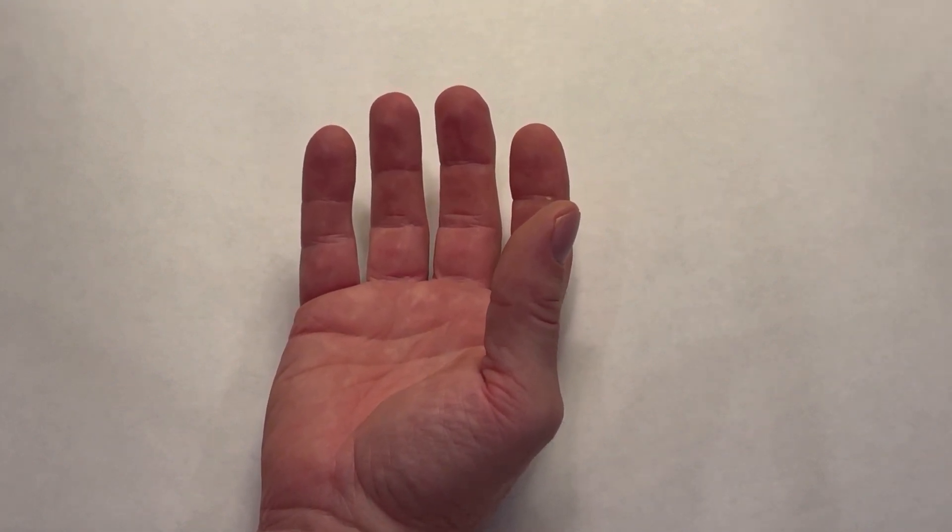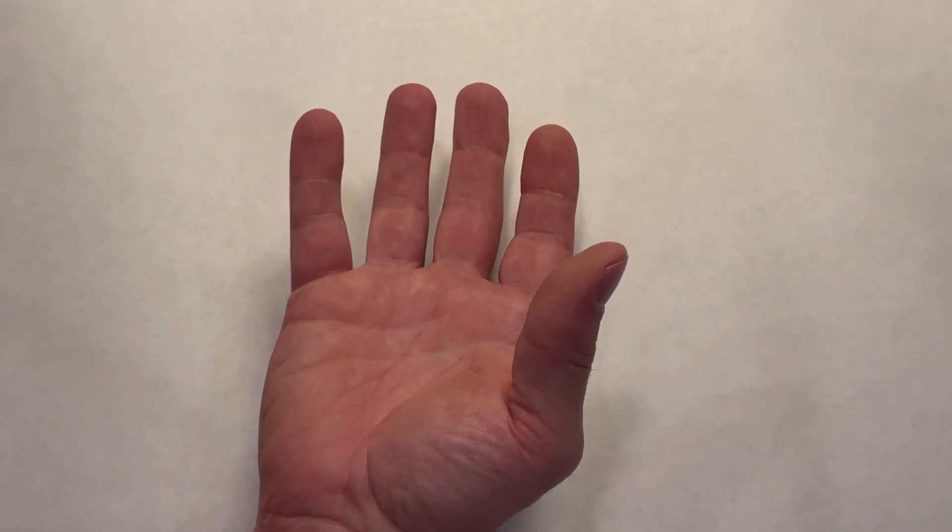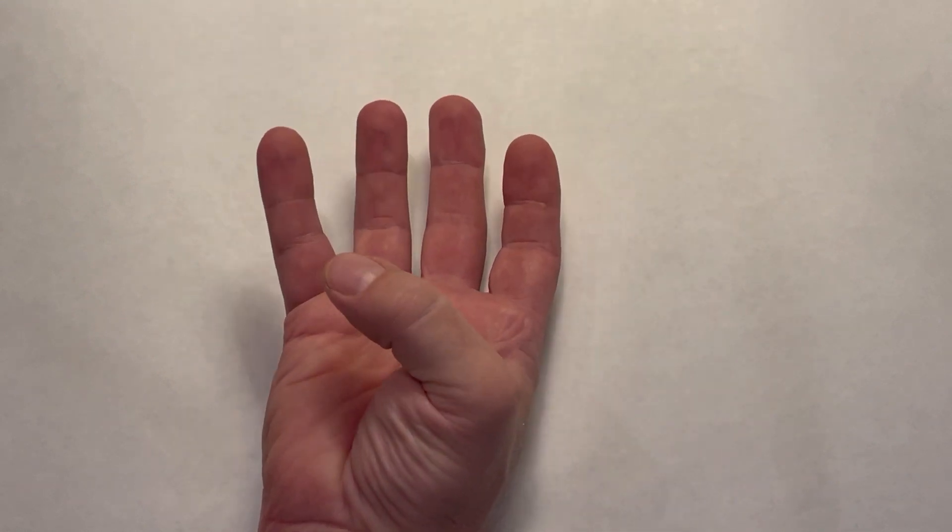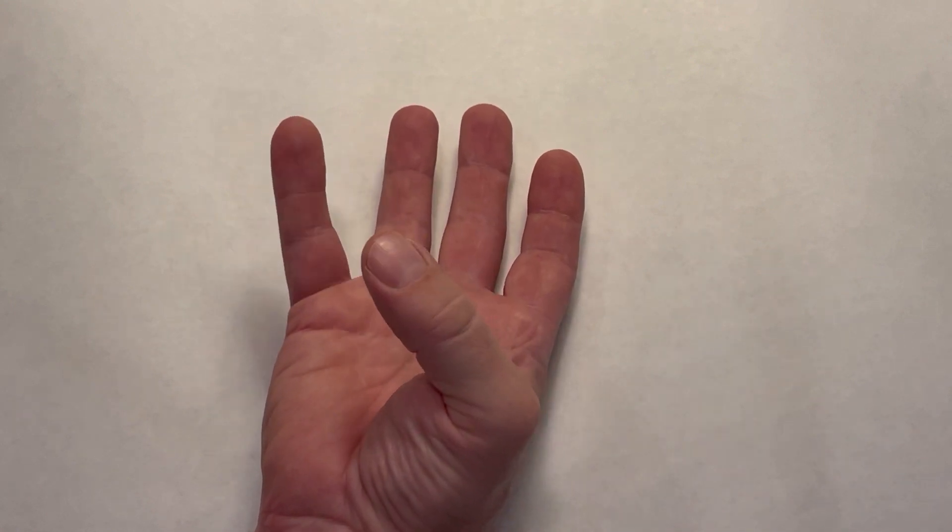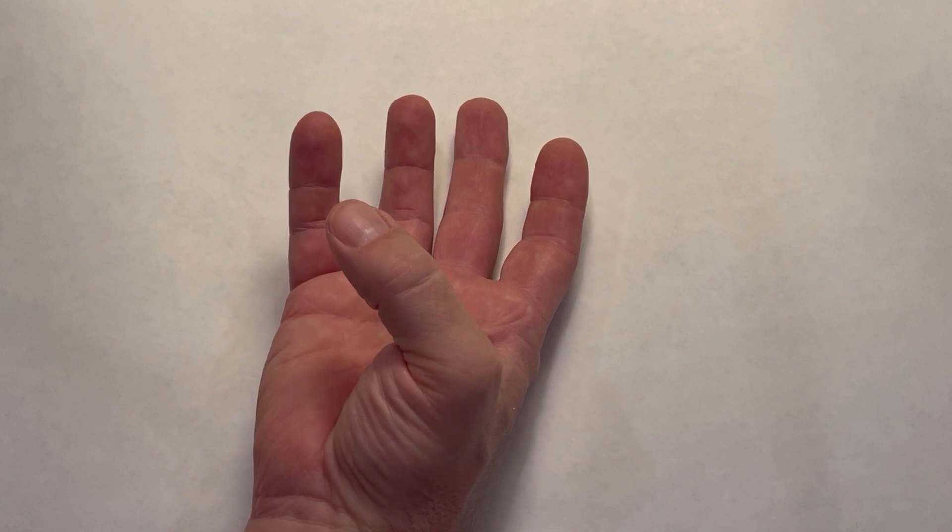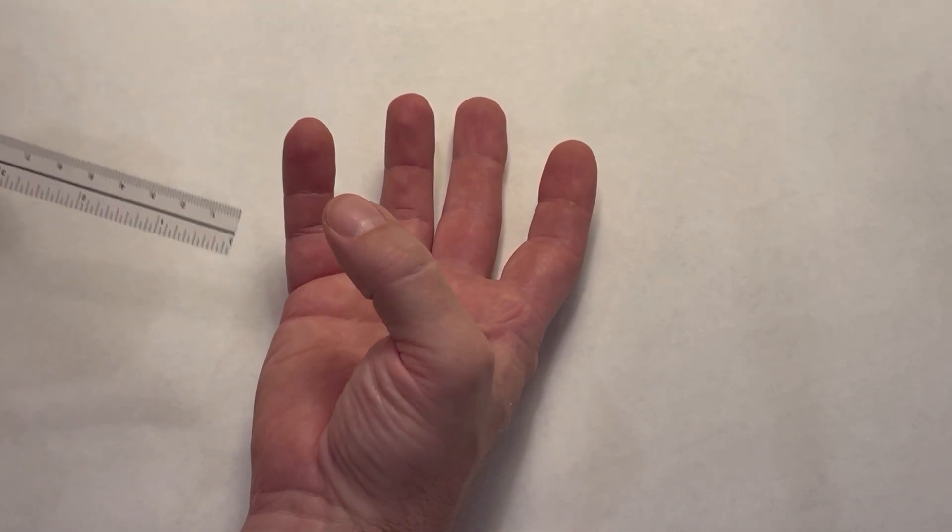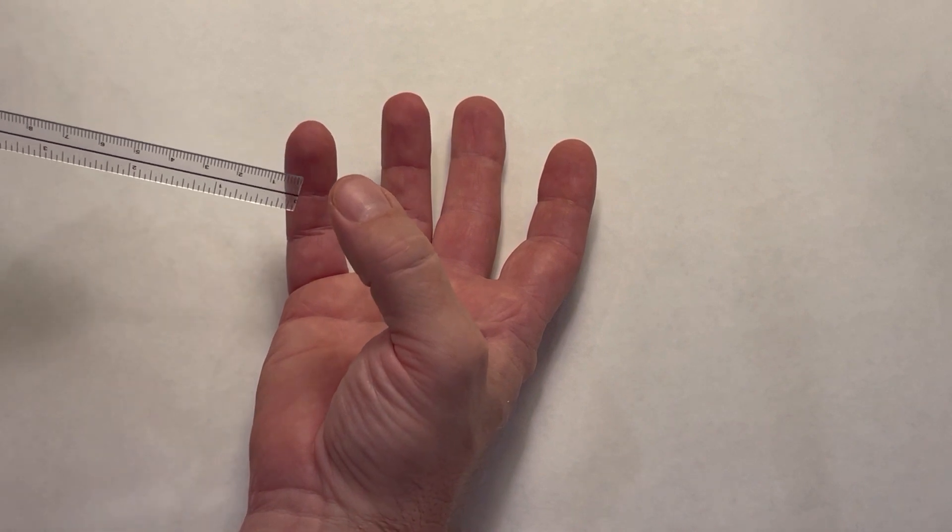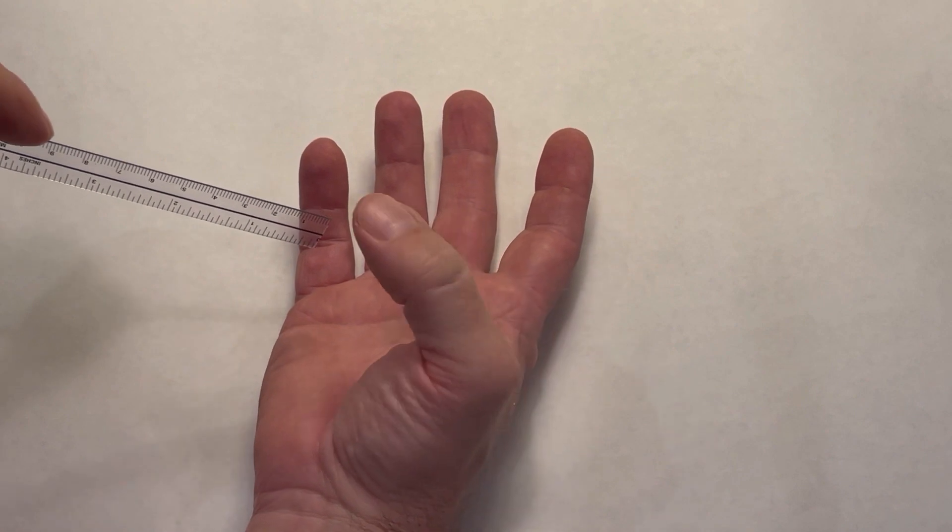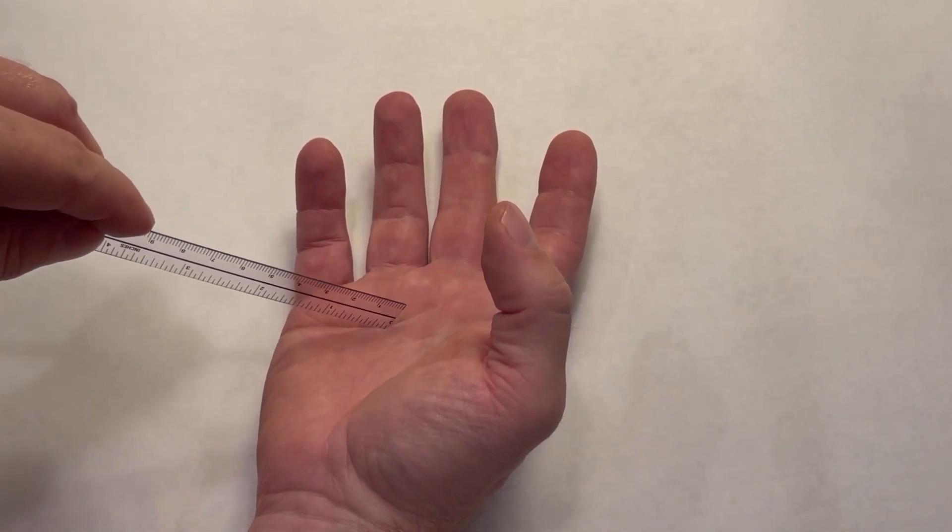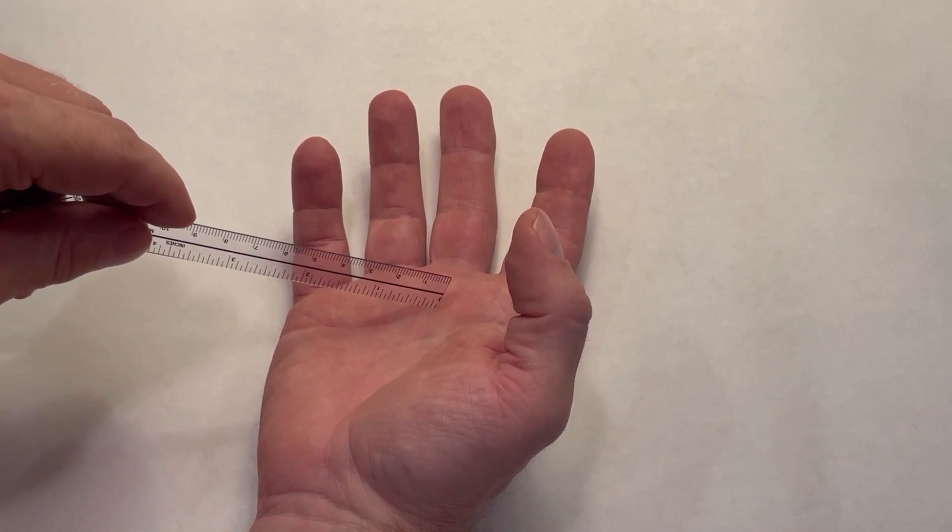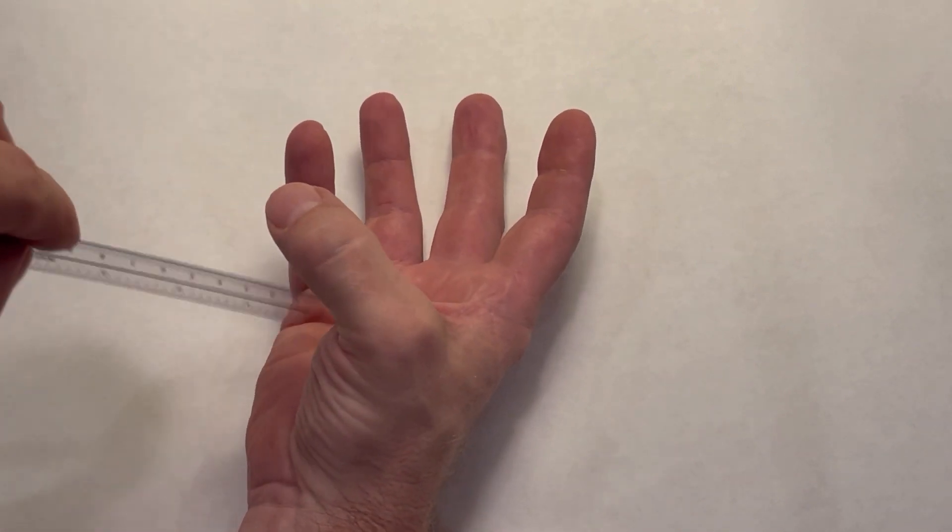There are some other ways in the literature to measure these. Most of those go something like this. Basically, the client is to bring their thumb as far as they can, and then some measurement is taken in centimeters. Sometimes it's from the nail. Sometimes it's from the IP crease. Sometimes it's over the third metacarpal at the distal palmar crease. Sometimes it's over the fifth metacarpal to the distal palmar crease.